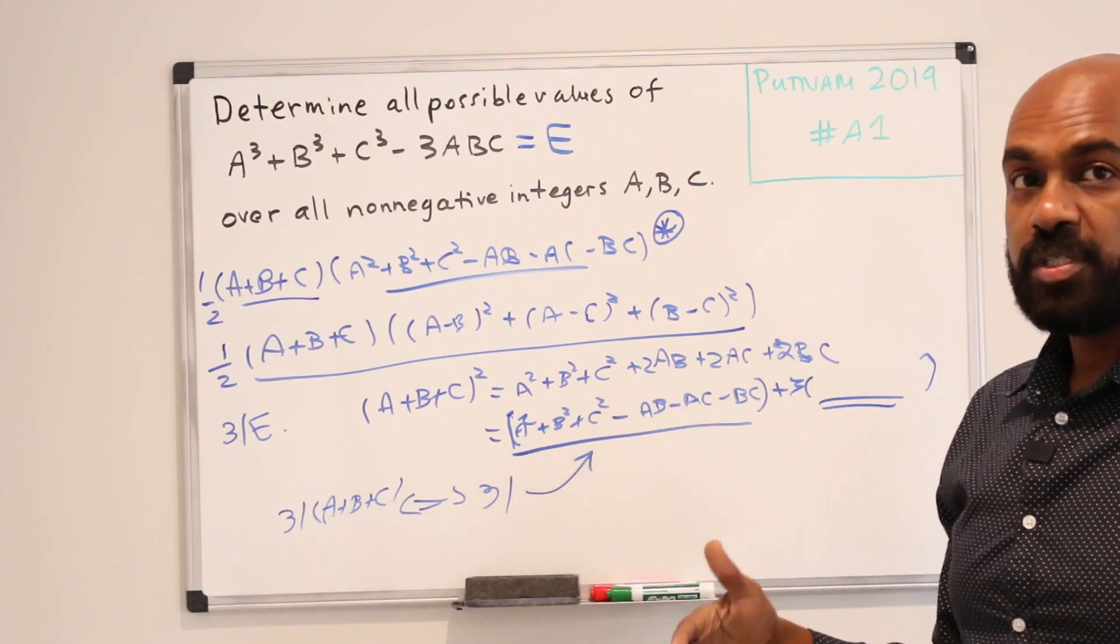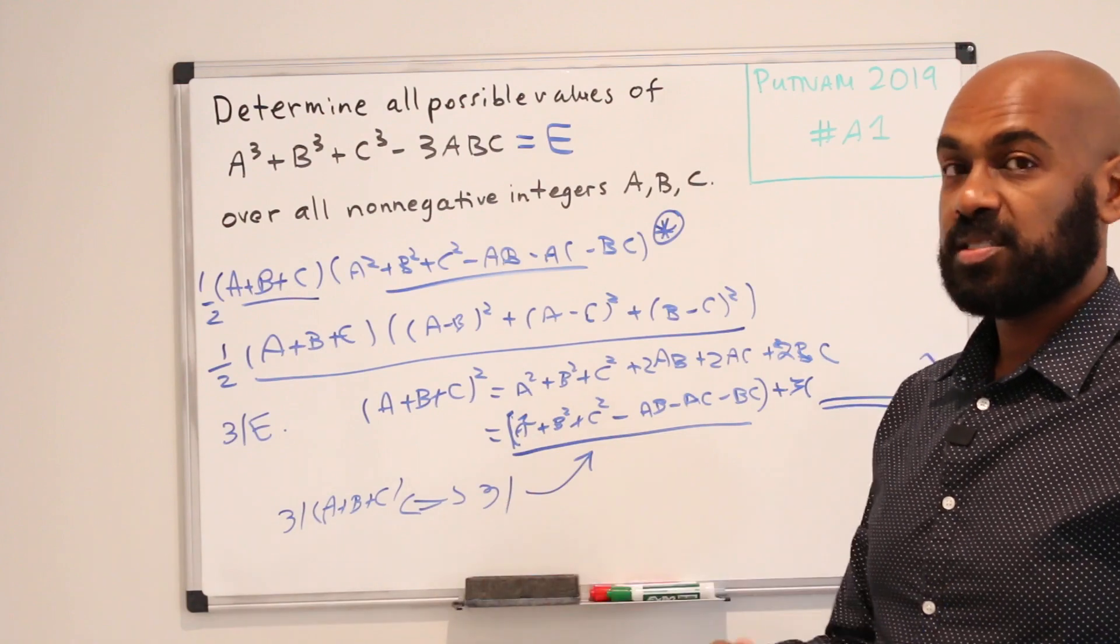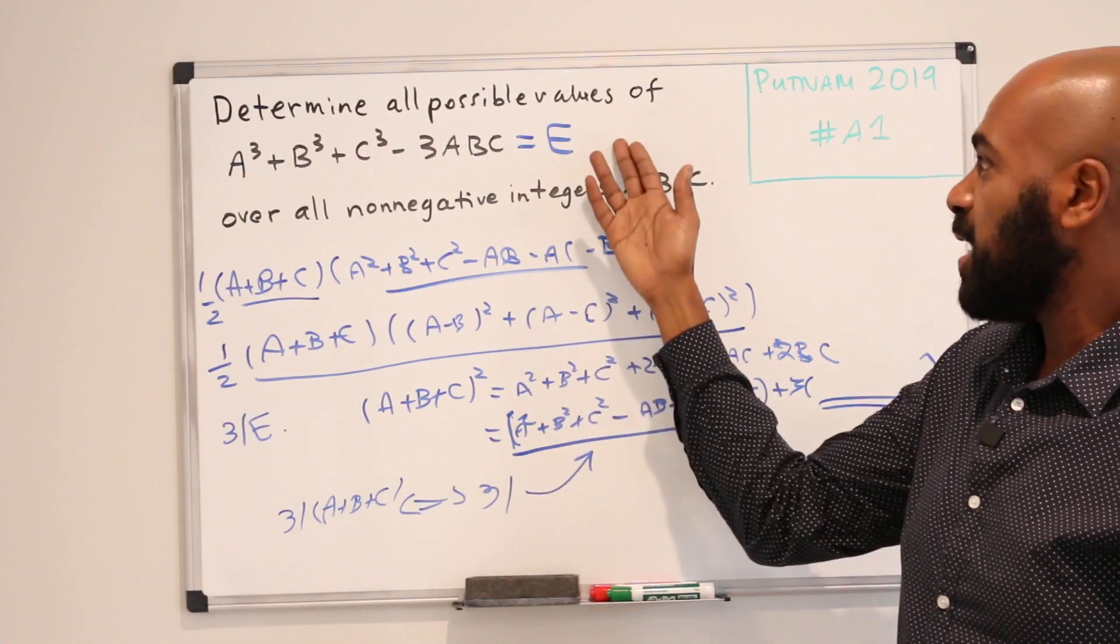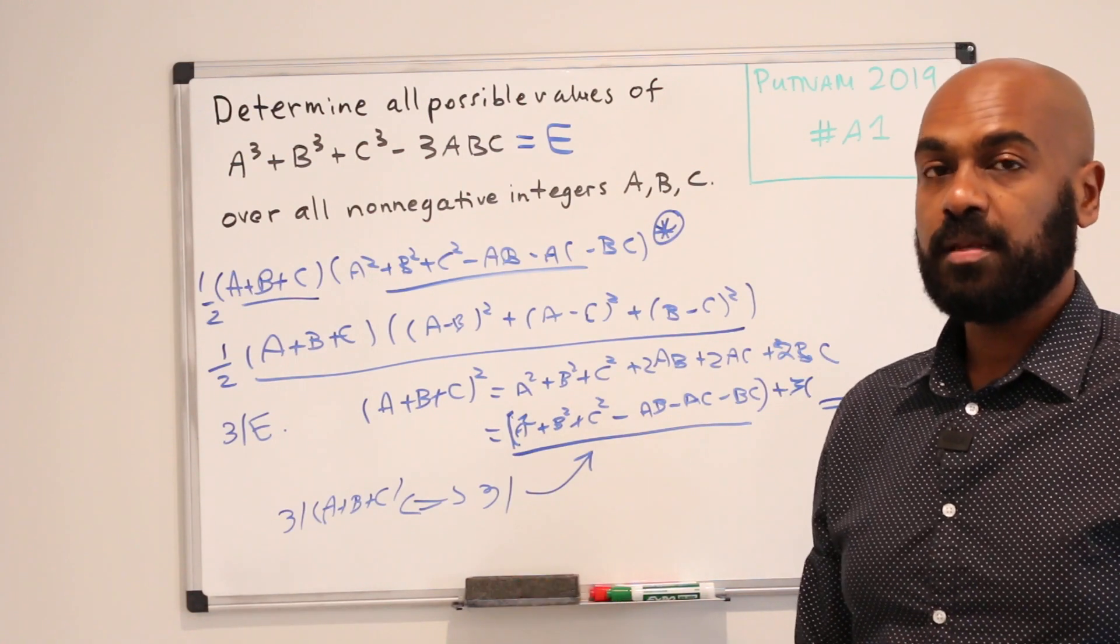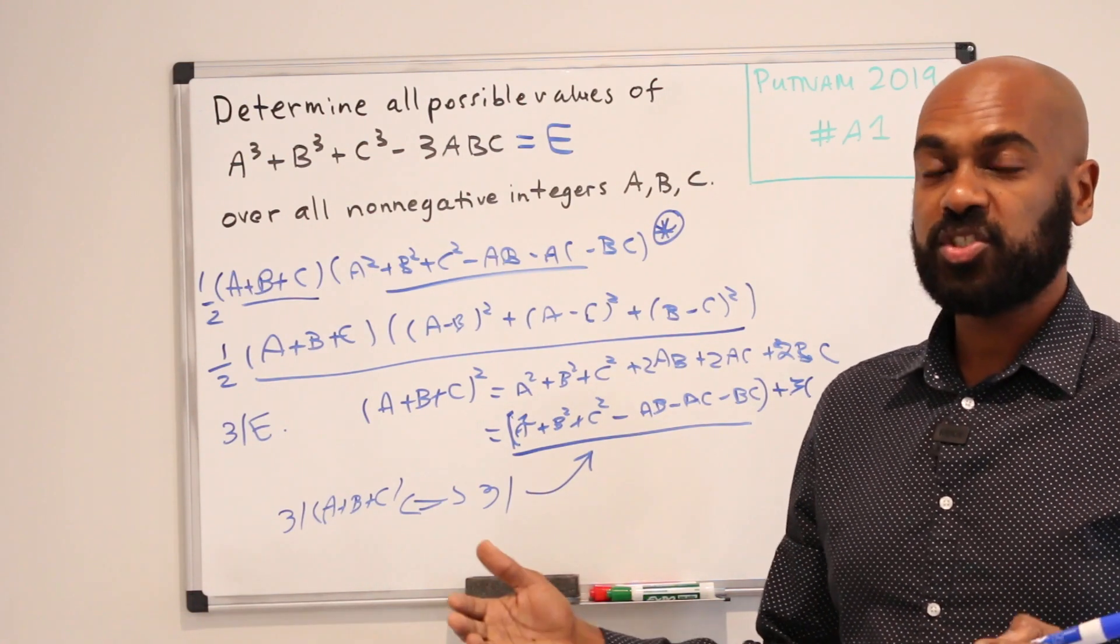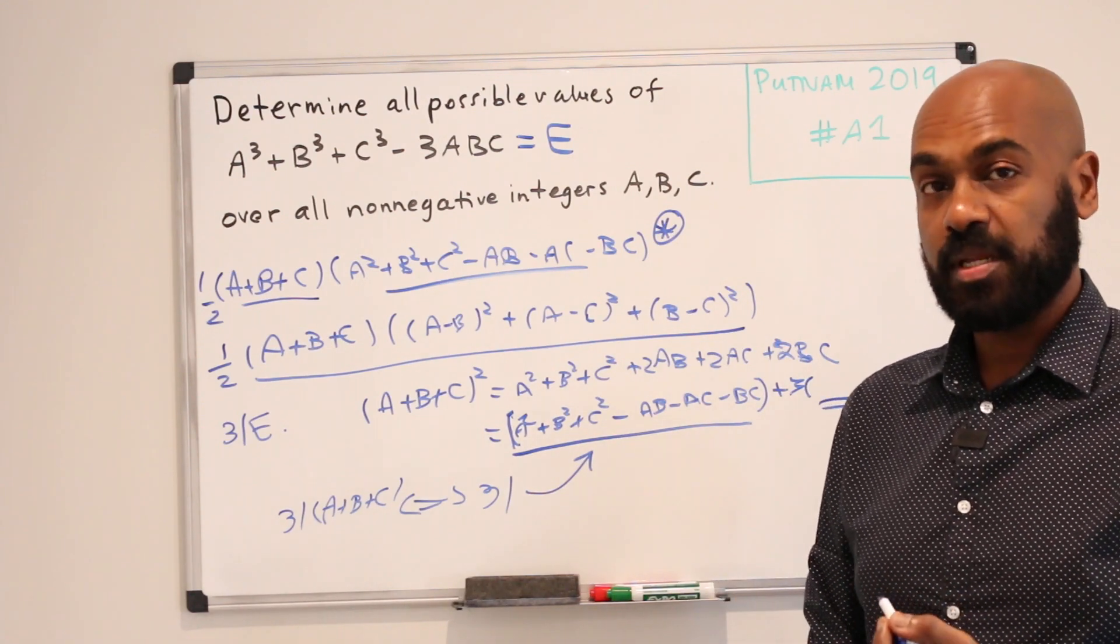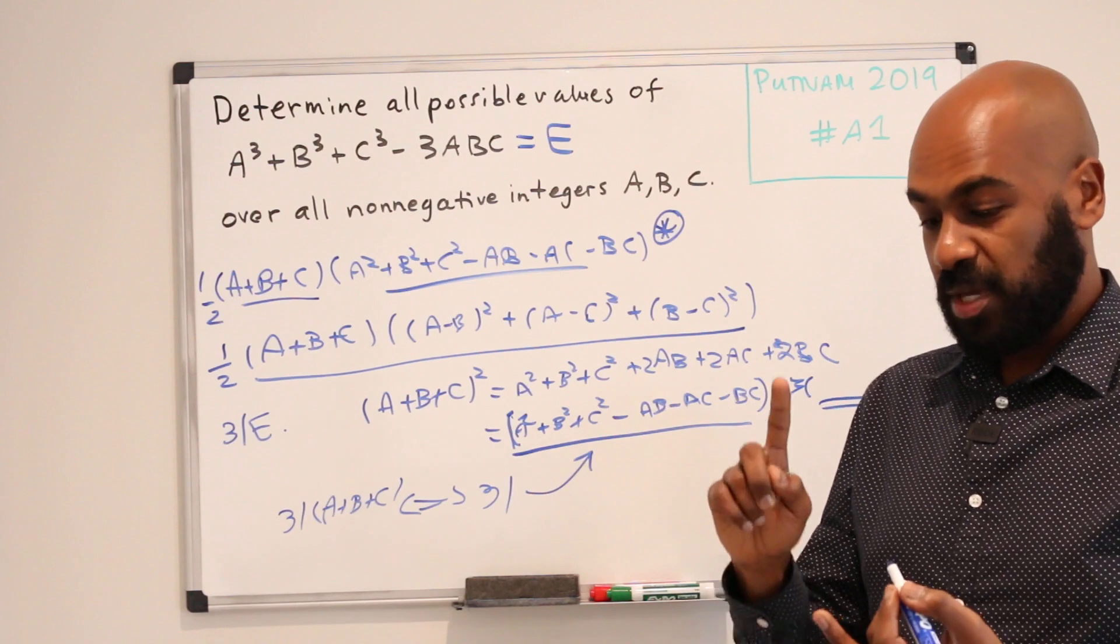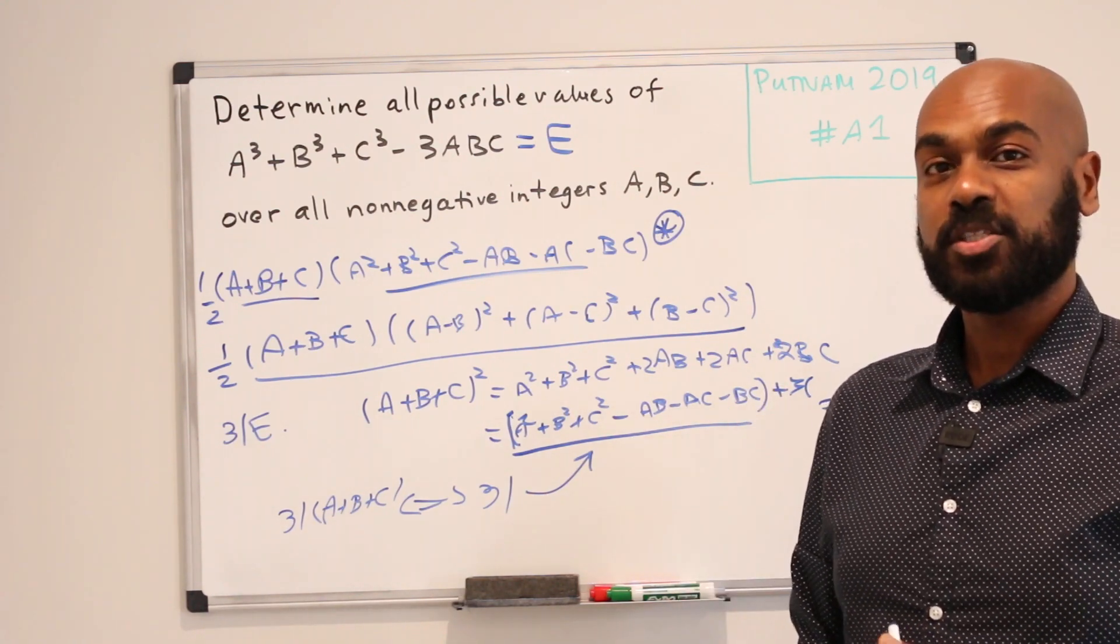So in conclusion, if 3 divides E, then 9 is forced to divide E. And so that tells us the multiples of 3 that we can get as an output for E must be multiples of 9. Cool. So that pretty much sums up the numbers that we can get. We proved we can get everything that's not a multiple of 3. And then if you get a multiple of 3, it must be a multiple of 9. And then we can actually get multiples of 9.